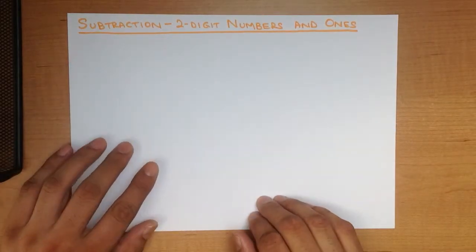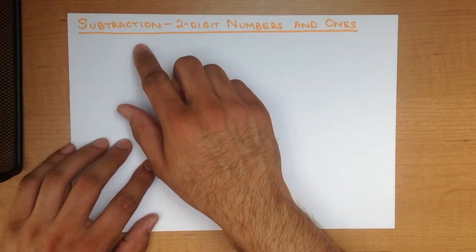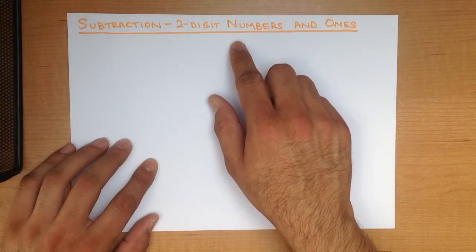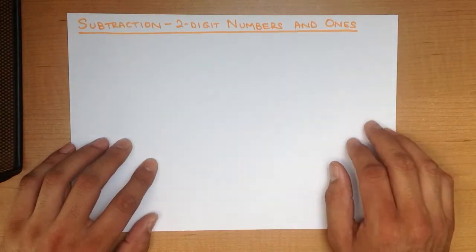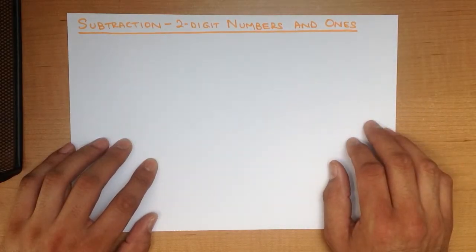In this tutorial, we are going to go through subtraction of two-digit numbers and ones using the vertical method.